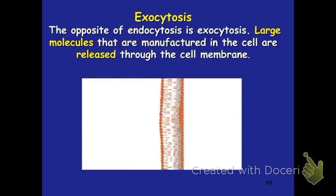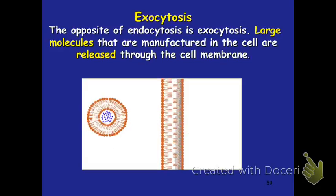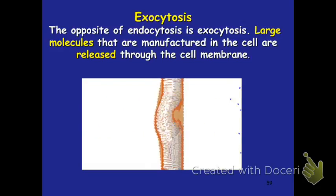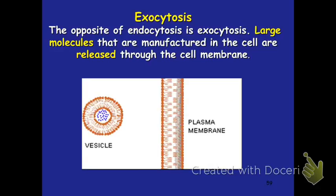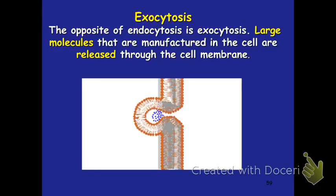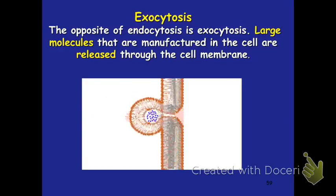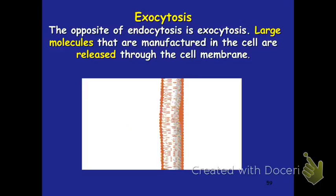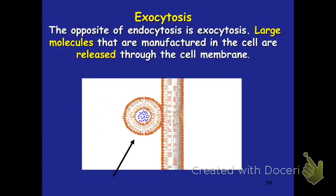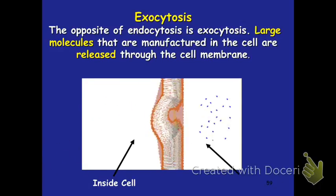Just a quick recap: endocytosis and exocytosis are opposites. In exocytosis, we are releasing stuff out of the cell — the vesicle fuses with the membrane and material is released out. In endocytosis, the opposite happens. Both of these require energy. This is the end of our notes. Make sure you have everything filled in and are ready to turn it in on your due date. Have a great rest of your day.